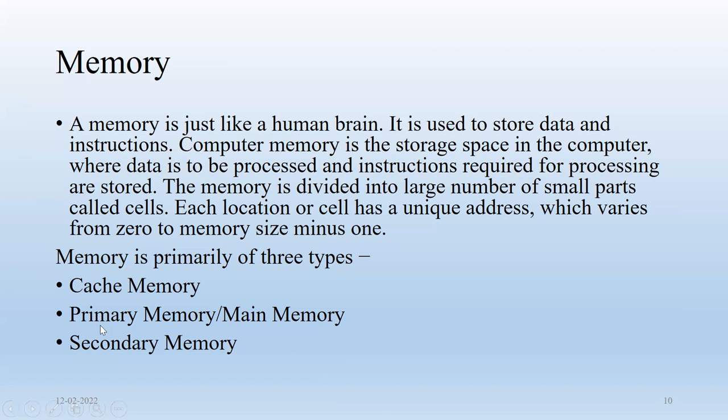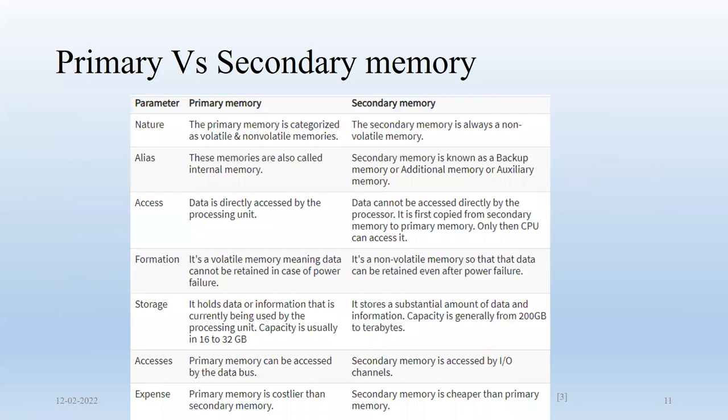Primary memory is used when we are installing something or working with a current file — that will be stored in primary memory. Secondary memory is for future reference, for longer-term storage. Let's see the differences between primary and secondary memory.